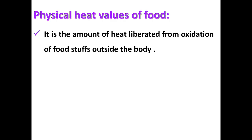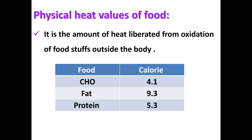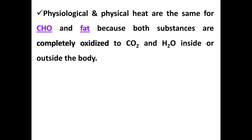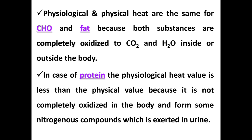Physical heat value of food is the amount of heat liberated from oxidation of food outside the body. For carbohydrate it is 4.1, for fat it is 9.3, and for protein it is 5.3. The physiological and physical heat values are the same for carbohydrates and fat because both are completely oxidized to carbon dioxide and water. But for protein, the physiological heat value is less than the physical heat value because protein is not completely oxidized in the body, forming nitrogenous compounds like urea excreted in urine.